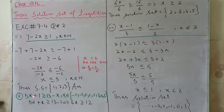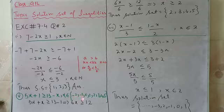Now part 5: 5x plus 1 is greater than or equal to 13 minus x, where the condition is given that our solution set should belong to the set of numbers: minus 2, minus 1, 0, 1, 2, 3, 4, 5.